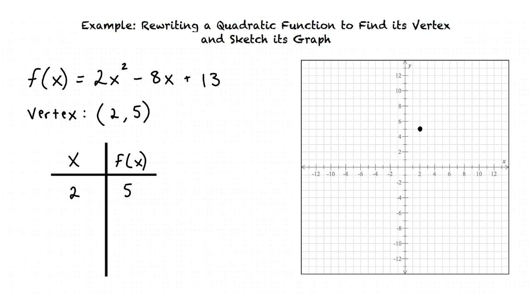To find some other points in our graph, we can choose x values, some greater than 2 and some less than 2, and plot those in our graph. The x values 1 and 0 are less than 2, and the x values 3 and 4 are greater than 2.